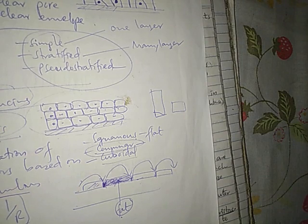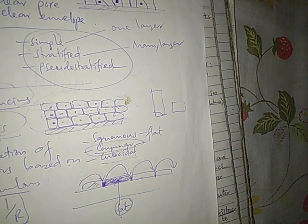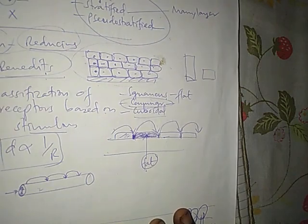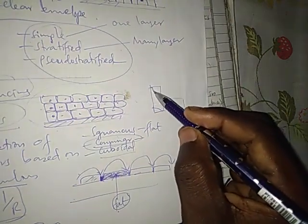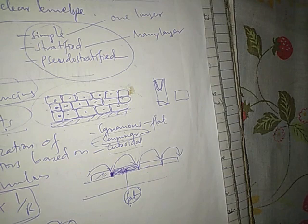For this simple columnar epithelium — the question is to identify the type of tissue, and it is simple columnar. Simple columnar epithelium is found in the stomach. The esophagus has stratified squamous epithelium, but the stomach has simple columnar epithelium, as does the intestine, until you reach the rectum where it changes back to stratified squamous.